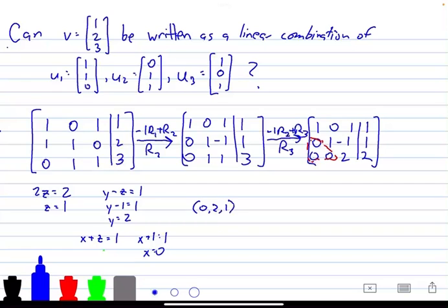So if we want to check our answer, yes. So yes, we can make this combination. So basically, if we want to check our answer, we would say 0 times 1, 1, 0, plus 2, 0, 1, 1, plus 1, 1, 0, 1, would give us that 1, 2, and 3.